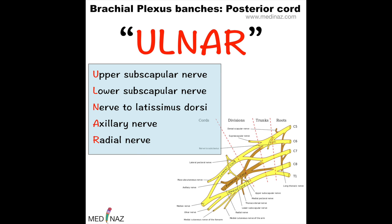The mnemonic for posterior chord branches is ULNAR. Follow the regulators: U for upper subscapular nerve, L for lower subscapular nerve, N for nerve to latissimus dorsi, then A for axillary nerve, and R for radial nerve.